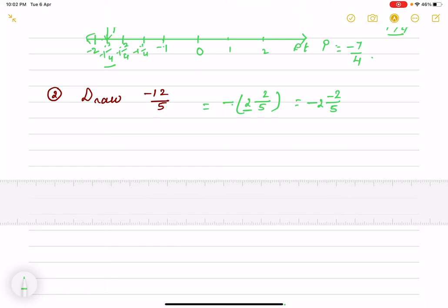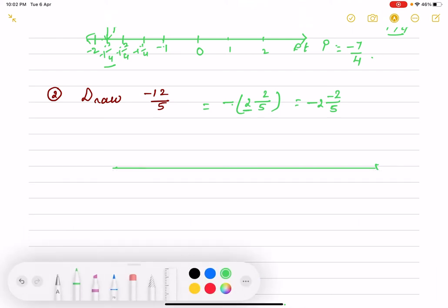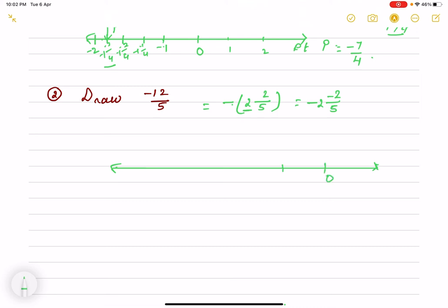Draw the number line straight with an arrow on the negative side. Here is 0, then minus 1, minus 2. After that, according to the denominator, we divide it. We have gone to minus 2, then there is a fragment to divide. Minus 2, then 1, 2, 3, 4, 5. This point is minus 3.